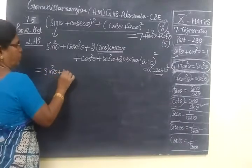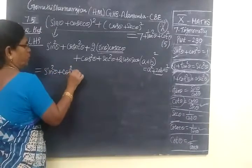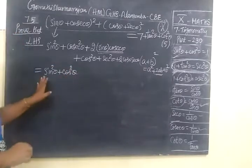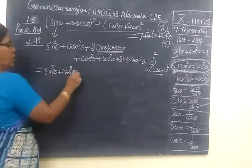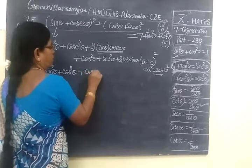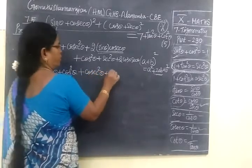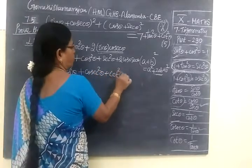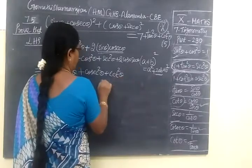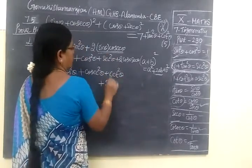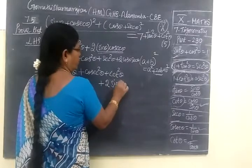Equal to sine square theta. We need cos square theta. We need cos square theta, it will be 1. You see in the first identity, plus cos square theta. Cos square theta plus sec square theta.